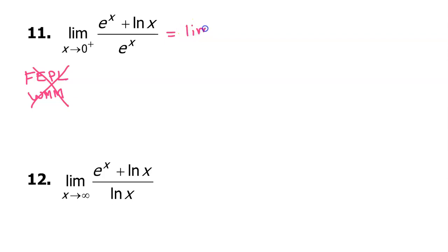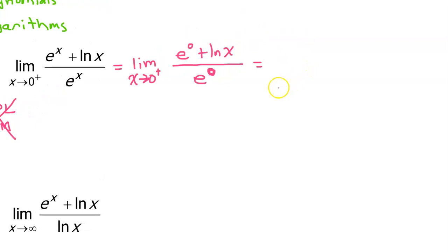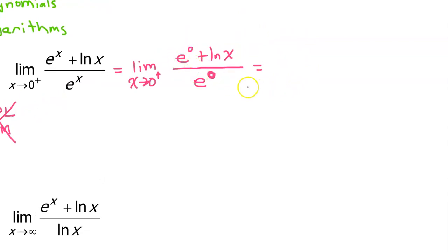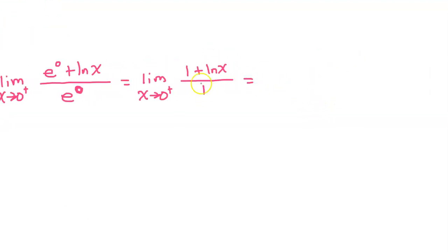As x approaches 0 from the right, e to the x power is going to approach e to the 0 power. So the original limit will equal the limit as x approaches 0 from the right of e to the 0 power plus the natural log of x, over e to the 0 power. Since e to the 0 is 1, this simplifies to the limit as x approaches 0 from the right of 1 plus natural log x, over 1.